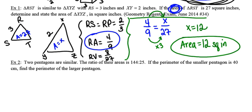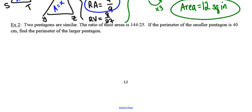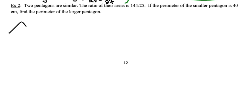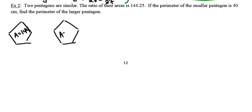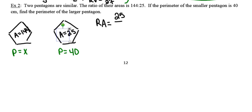Number two is a very similar type of question, except it deals with pentagons. We're dealing with two similar pentagons. The ratio of their areas is 144 to 25 — so one pentagon has area 144, and the other has area 25. The perimeter of the smaller pentagon is 40 centimeters, and we want to find the perimeter of the larger pentagon.